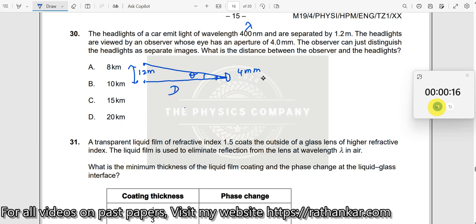So, we know that if you want to see two objects as two distinct objects, what do we need here? The value, this value of theta should be equal to 1.22 times lambda divided by d where lambda is given and this value is nothing but your d. This value is d here.